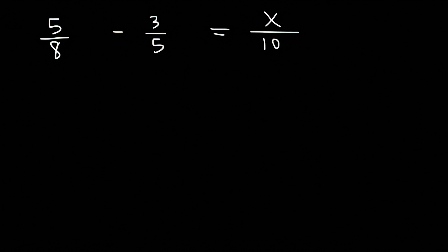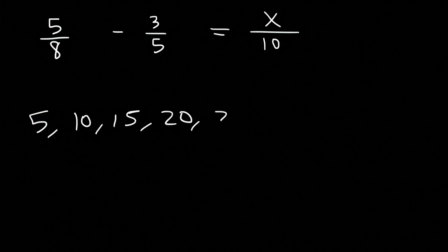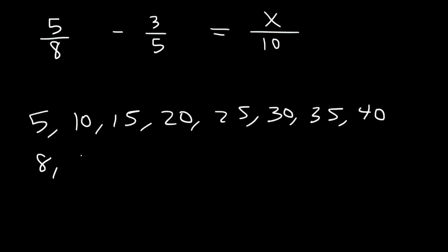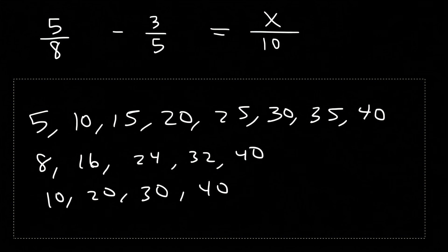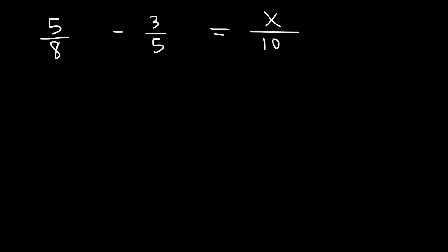We can make a list. Multiples of 5 are 5, 10, 15, 20, and so forth. Multiples of 8 are 8, 16, 24, 32, and 40. Multiples of 10 also include 40. So 40 is the least common multiple. Let's multiply every fraction by 40.